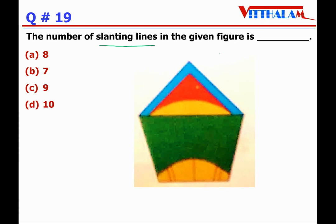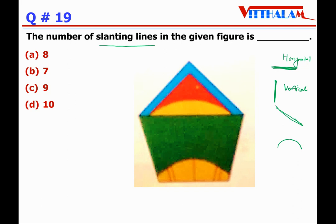Question number 19: the number of slanting lines in the given figure. We have a figure and we have to find out the slanting lines. So basically there are four types of lines: sleeping lines, which are called horizontal lines; standing lines, which are called vertical lines; then inclined lines, which are called slanting lines; and then there are curve lines.